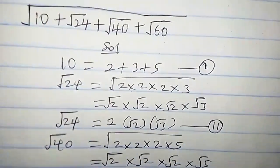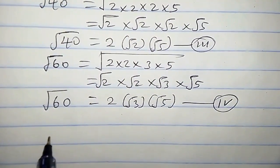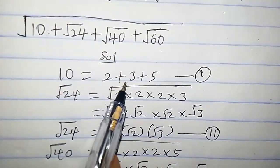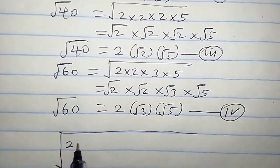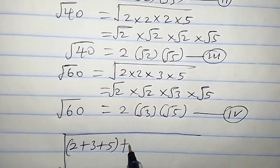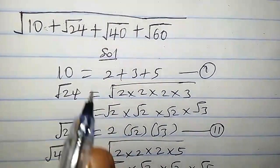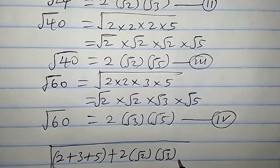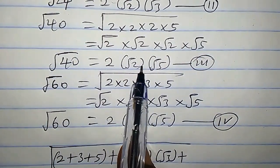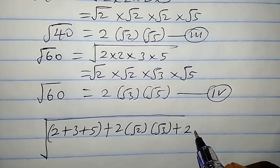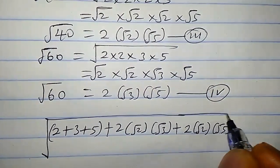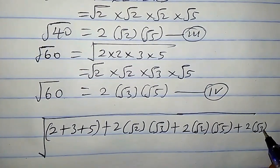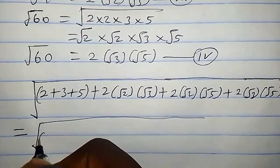The next step is to plug in all these equations from 1 to 4. We're going to have a very big square root of: we replace 10 with (2+3+5), plus the next term is √24, which we replace with 2√2·√3, plus √40 replaced with 2√2·√5, plus √60 replaced with 2√3·√5. So this equals square root of (2+3+5).